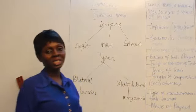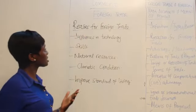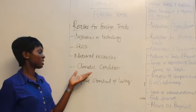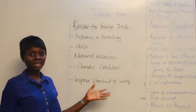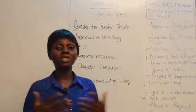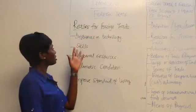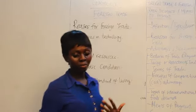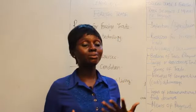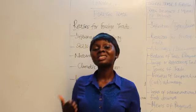Now let's look at the reasons why countries decide to engage in foreign trade. Countries go into foreign trade for various reasons: differences in technology, differences in skills, differences in natural resources, differences in climatic conditions, and in order to improve their standard of living. The level of technology varies across countries — some have better technology than others. Similarly, some countries, especially advanced ones, have more skills than less developed countries, such as expatriates in construction, road building, and the oil industry.